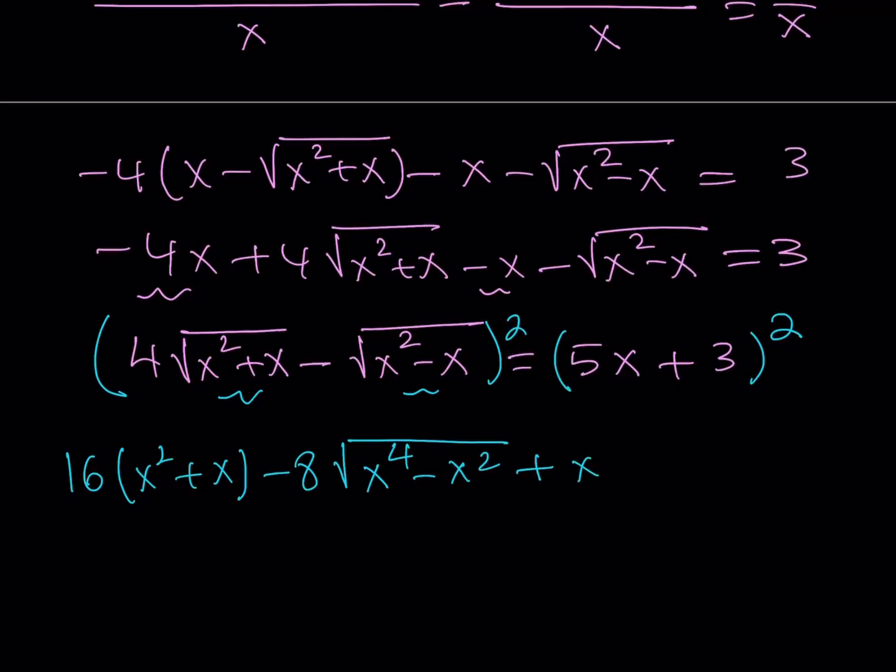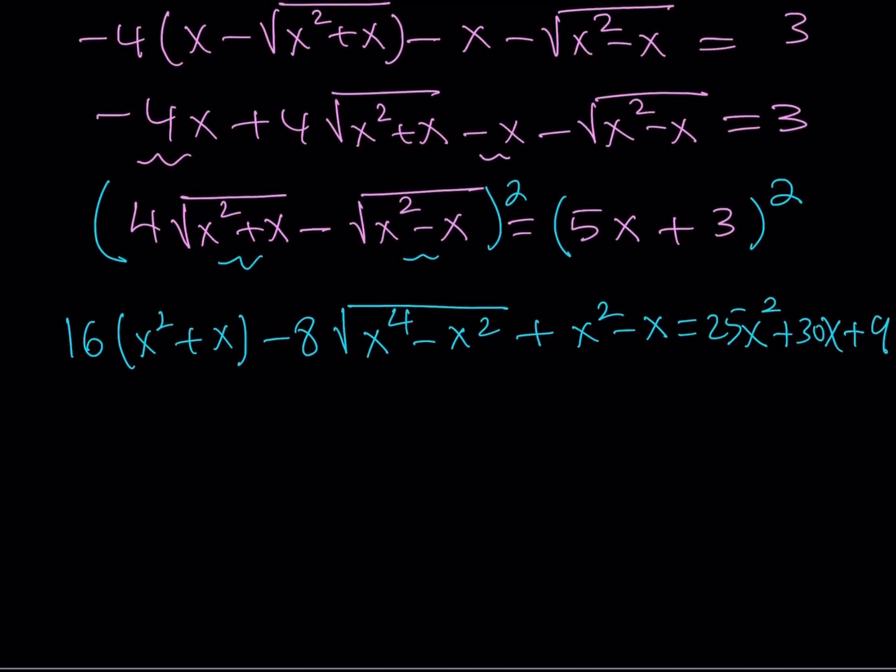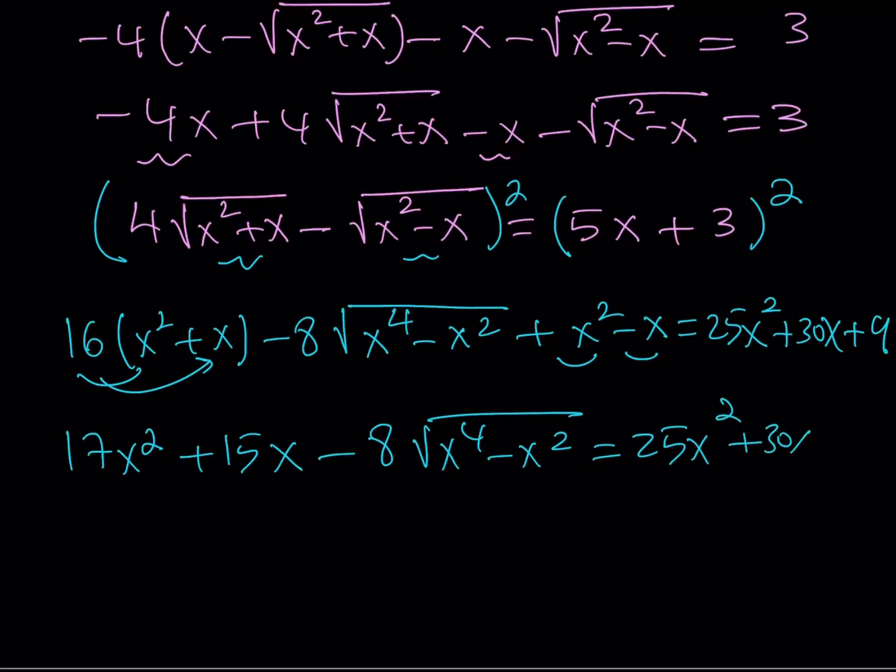And notice that I use difference of two squares one more time. Plus x squared minus x, which comes from b squared. And the right-hand side can be written as 25x squared plus 30x plus 9. That's just like a perfect square. Now let's go ahead and distribute. From here, I'm getting 16x squared plus x squared gives me 17x squared. Then I get 16x minus x, that is 15x. And then minus 8 times the quantity x to the 4th minus x squared. And the whole thing is equal to 25x squared plus 30x plus 9.